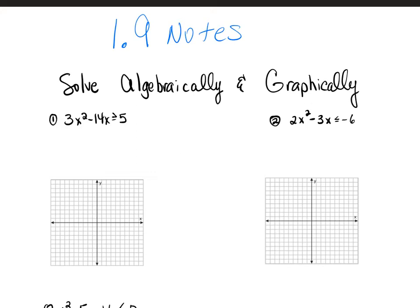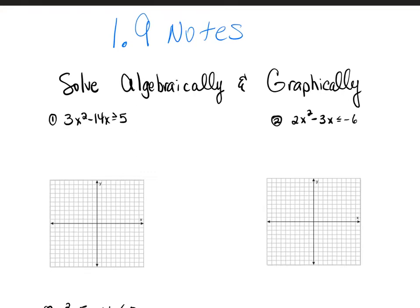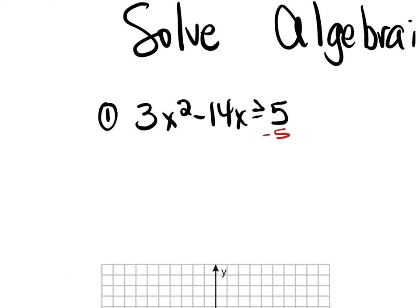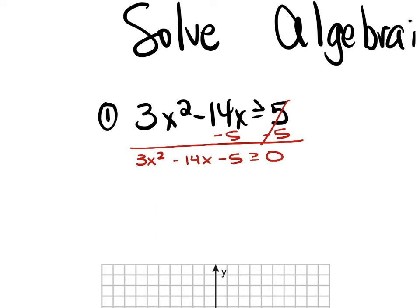For example 1, we have 3x squared minus 14x is greater than or equal to 5. Move that 5 over by subtracting each side, which leaves us with 3x squared minus 14x minus 5 is greater than or equal to 0. To solve this, take your 'a' term and your 'c' term and multiply them. A times c here is negative 15. Your factors of negative 15 that add up to be negative 14 are 1 and negative 15.